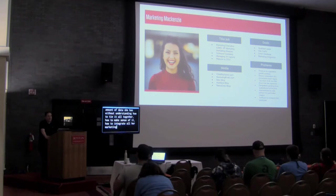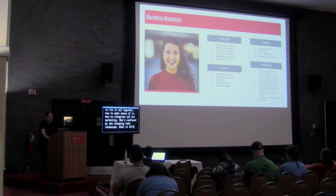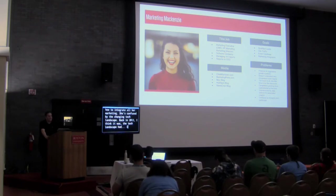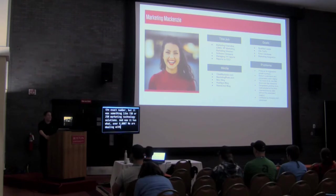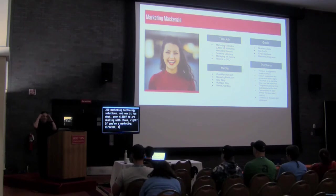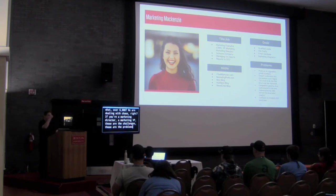Competitors are growing more sophisticated all the time, using more sophisticated software and data science. She's overwhelmed by the amount of data she has without understanding how to tie it all together. She's confused by the changing tech landscape. Back in 2012, the tech landscape had something like 150 or 250 marketing technology solutions, and now it has over 6,000. We are dealing with chaos. Those are the problems you're really dealing with — so how can we help solve them if McKenzie's our persona?